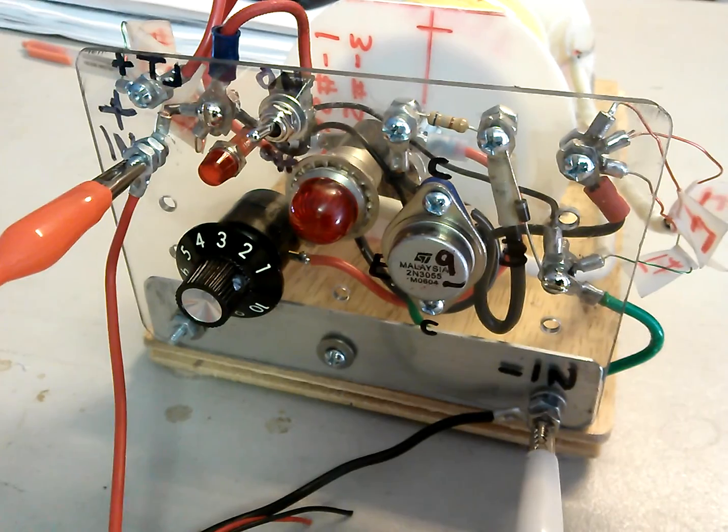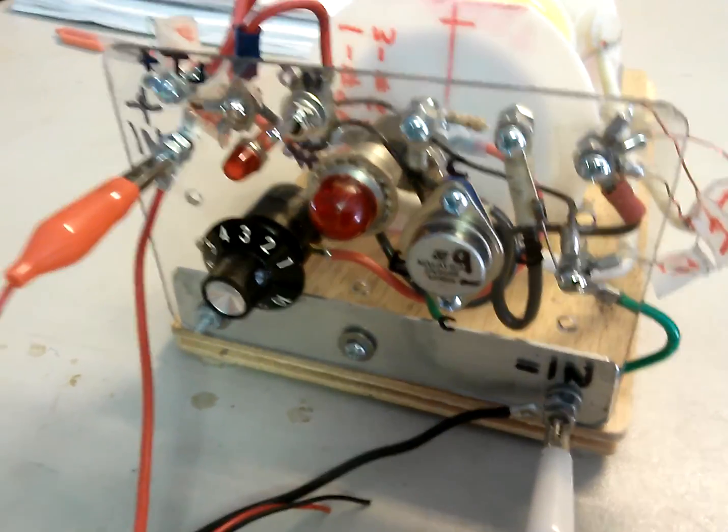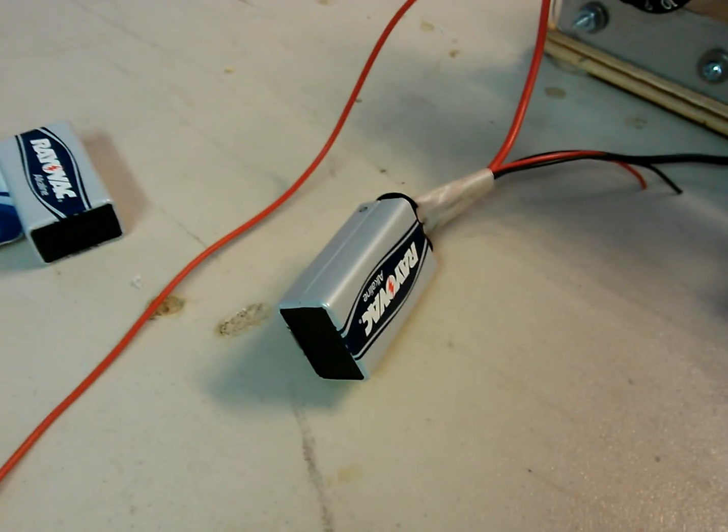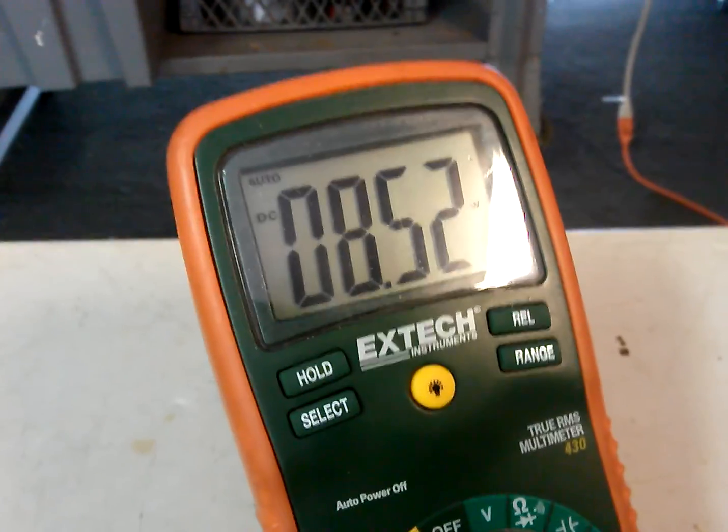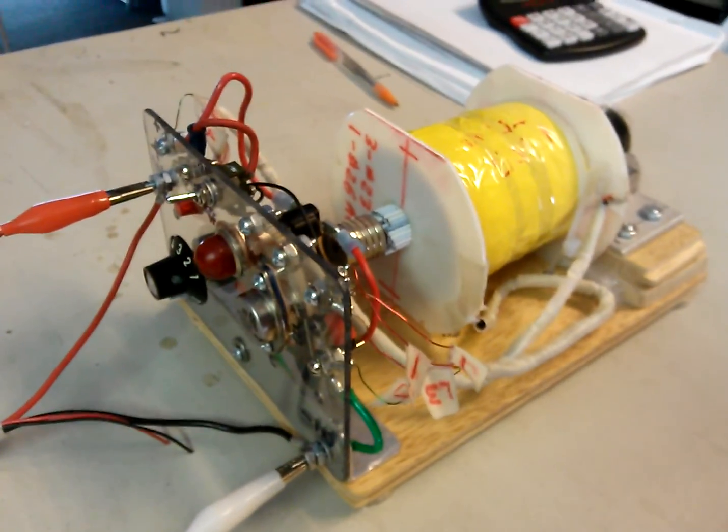This is 2N3055, which she used a different one, a smaller one. This is one of the bigger ones. Anyhow, it's running on a 9-volt battery and that's the current voltage. Brand new battery put in here, alkaline.